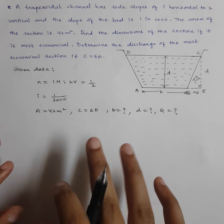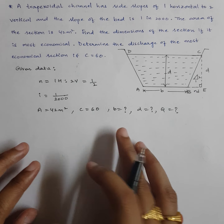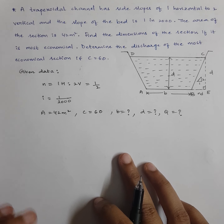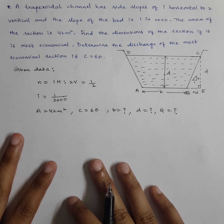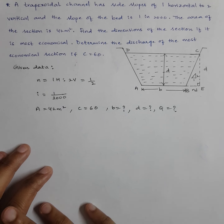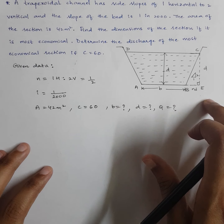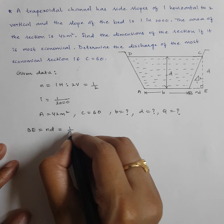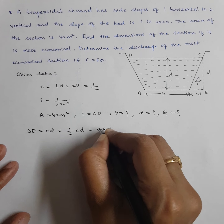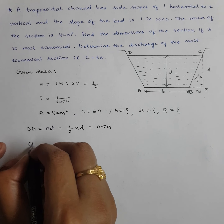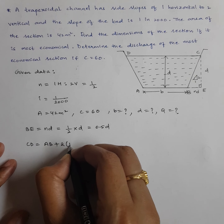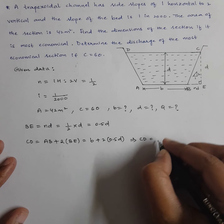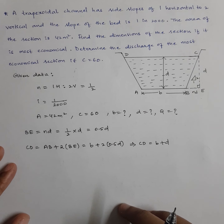To solve for B and D, we use the trapezoidal area formula: A equals (AB + CD)/2 into D, where CD equals AB plus 2 times the slant width (n·D). First, calculate the slant width: B equals n·D equals (1/2)·D equals 0.5D. Then top width CD equals B plus 2 times 0.5D equals B plus D.